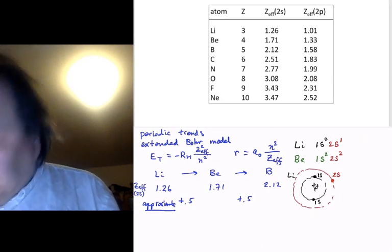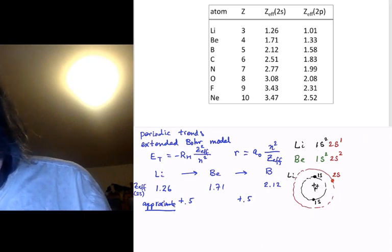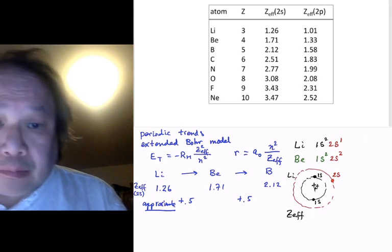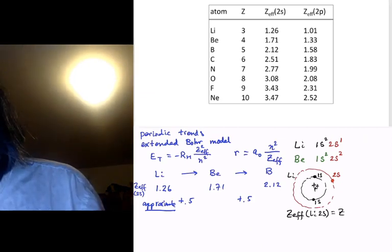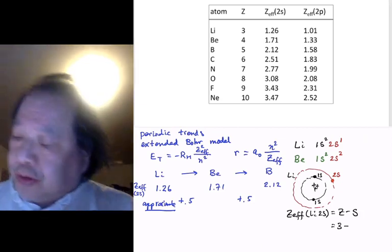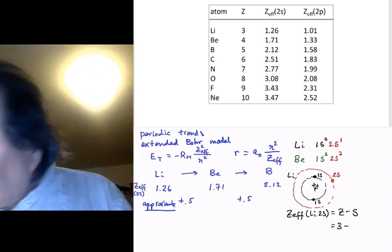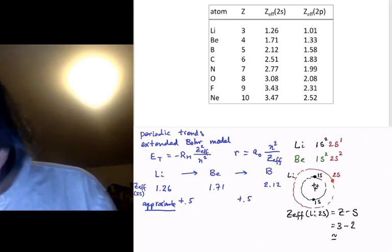If we're just going to get an approximate Z-effective, then we can do it in this way. Z-effective for lithium 2S is going to be Z minus S. That's going to be 3. The 1S electrons in our crude picture are entirely inside the 2S. They completely shield, 3 minus 2, and we get an approximate value for Z-effective of 1.